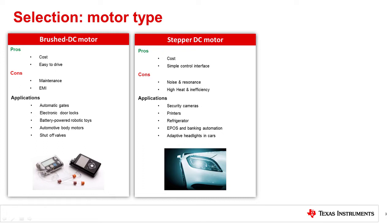Stepper motor application examples include security cameras, paper movement in multi-function and laser beam printers, refrigerator dampers, electronic point-of-sale, and banking automation applications such as receipt printers and ATM machines, and finally adaptive or auto-leveling headlights in vehicles.